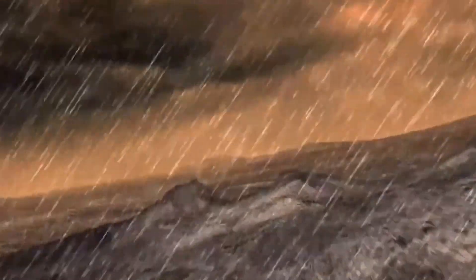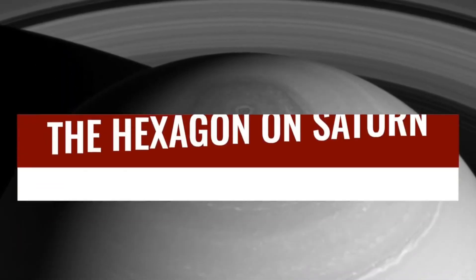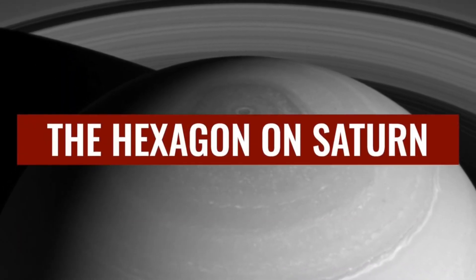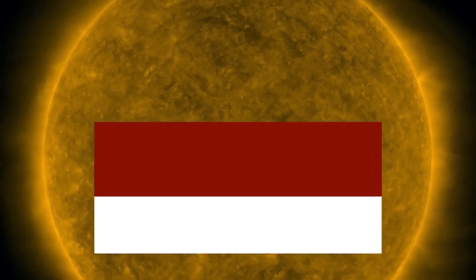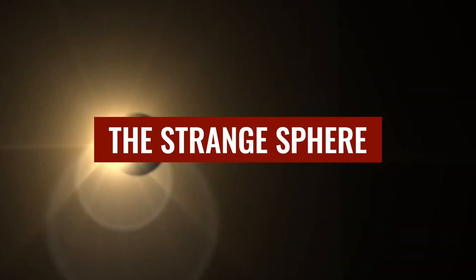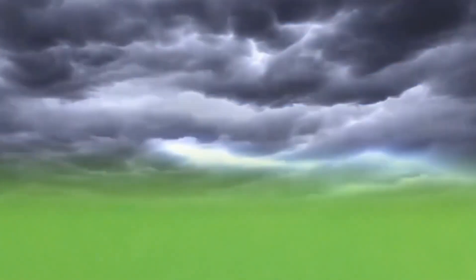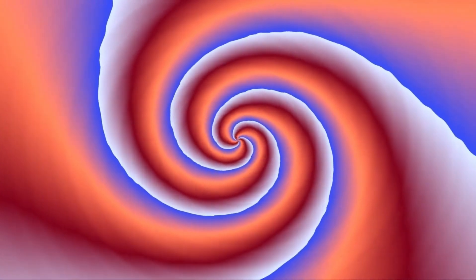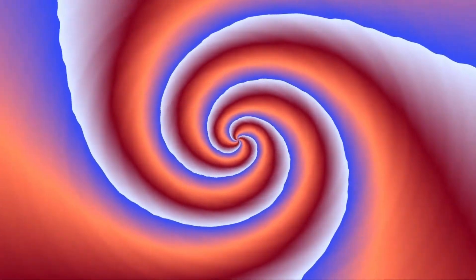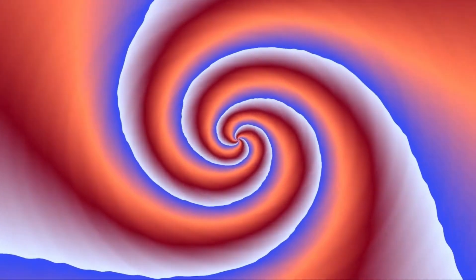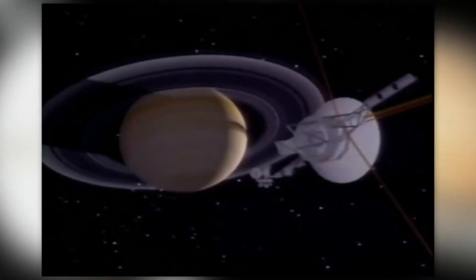The hexagon on Saturn. The space probe Voyager 2 photographed Saturn almost 40 years ago, bringing many new insights but also some still unsolved mysteries. These include photos showing a hexagonal structure at the north pole of the ringed planet. However, this is not a solid structure in the landscape.